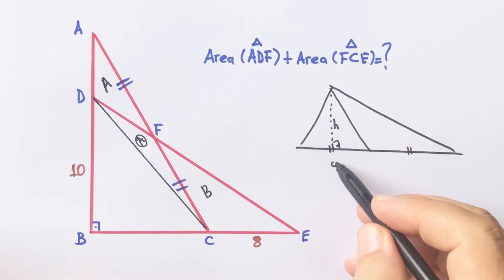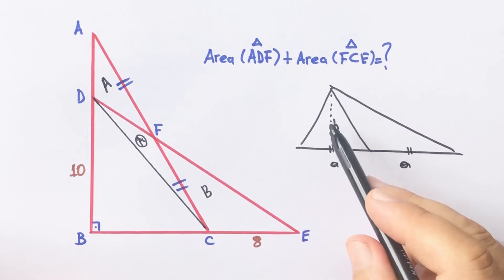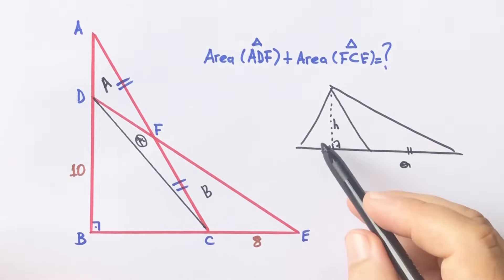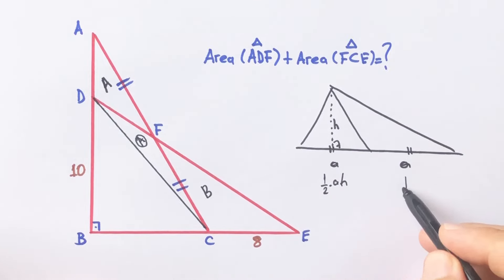Let's call these basis A unit. This triangle area equals half of the base and height, and this triangle area is also half of the base and height.